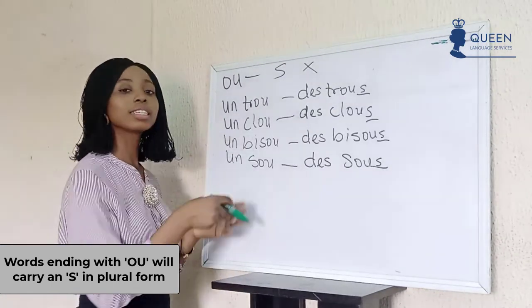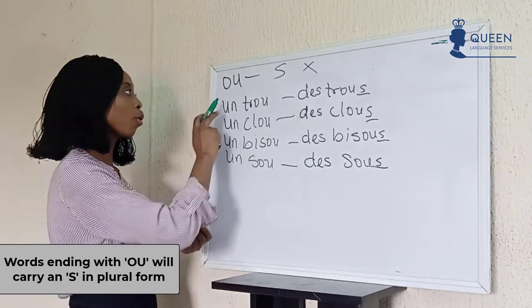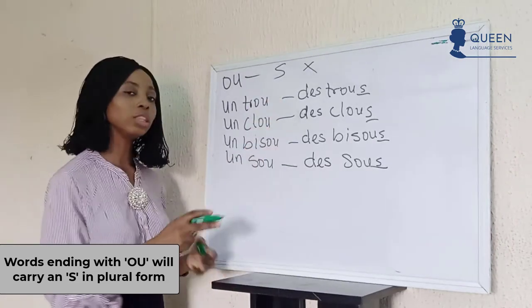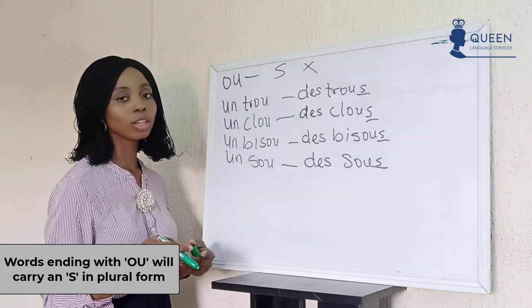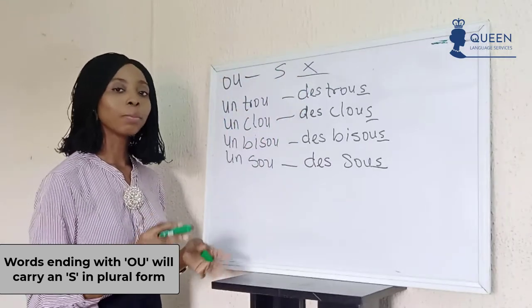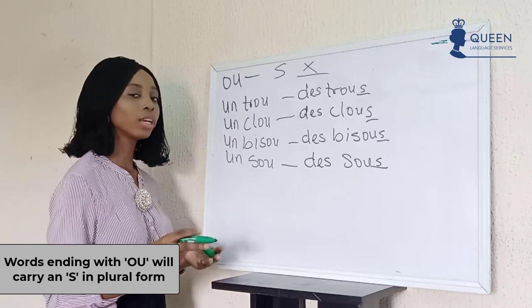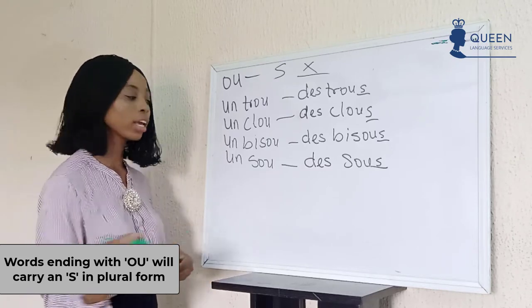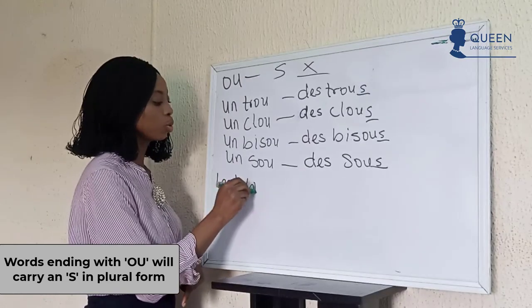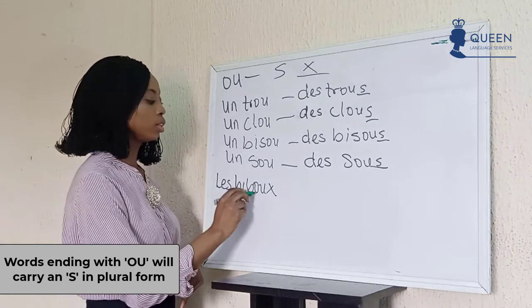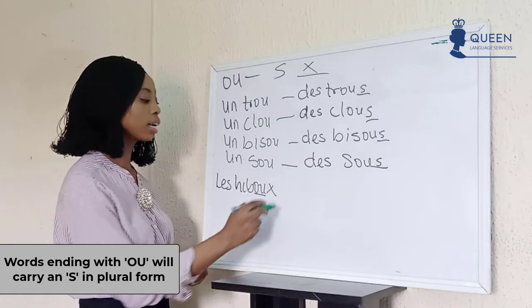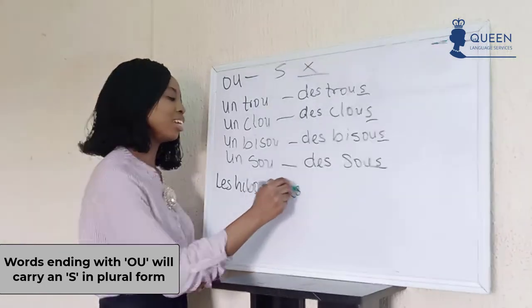For plural endings with words that have -ou: normally they take -x at the ending, but there are exceptions. There are seven exceptions where -ou words take -x. This includes words like 'les bisous,' 'les joujoux.'